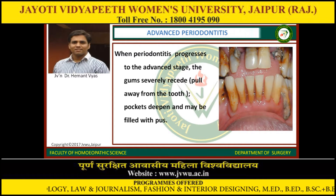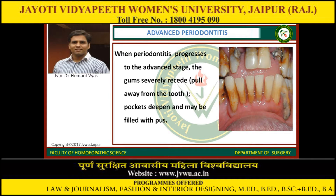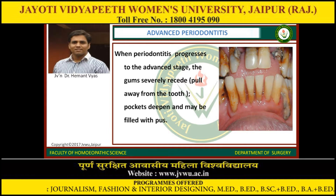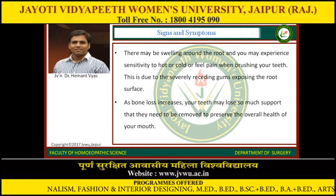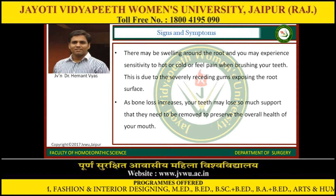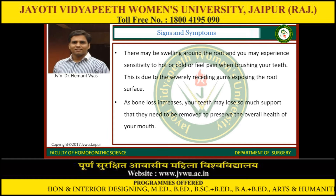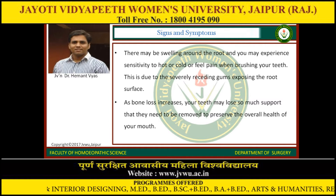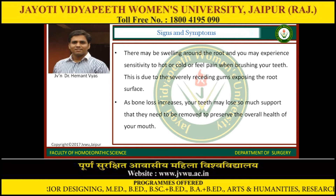Advanced periodontitis: when periodontitis progresses to the advanced stage, the gum severely recedes or pulls away from the tooth, pockets deepen and may be filled with pus. You can see an image of advanced periodontitis on the right side. There may be swelling around the root and sensitivity to hot or cold, or pain when brushing, due to severely receding gums exposing the root surface. As bone loss increases, teeth may lose so much support that they need to be removed to preserve the overall health of your mouth.